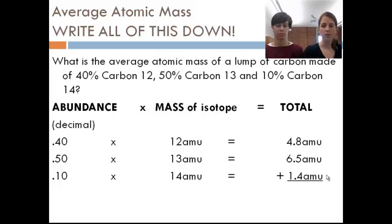Now all I have to do is add up the contribution of each element, and I get a total mass of 12.7 amu. So this sample of carbon has an average mass of 12.7 amu. Good.